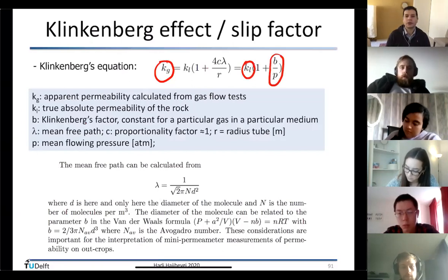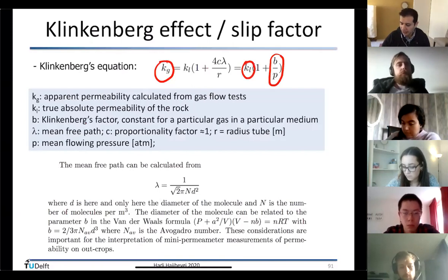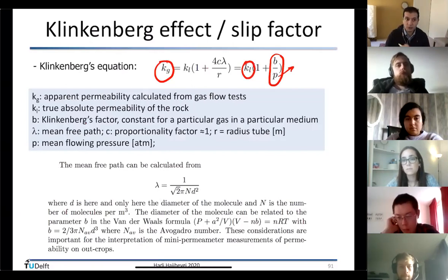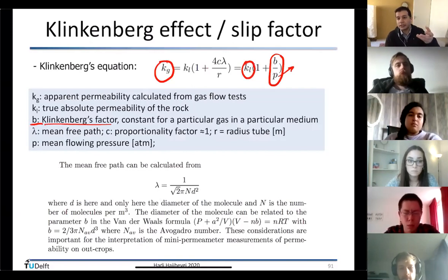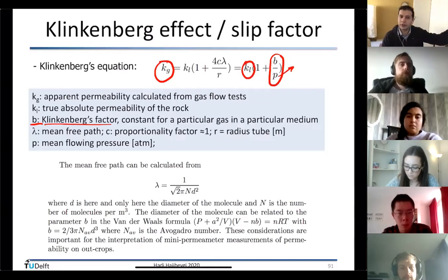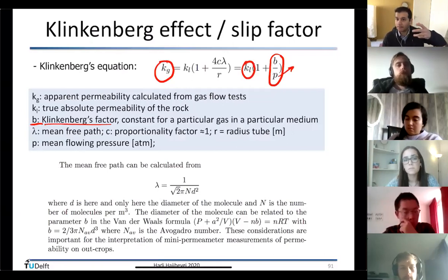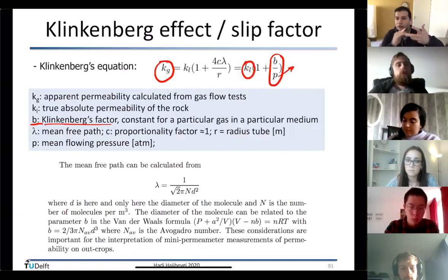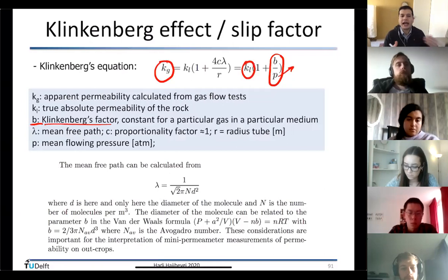The correction to gas permeability: the permeability measured with gas (k_g) should be corrected to liquid permeability (k_L). The correction term is b/P — Klinkenberg's factor b divided by pressure. At very high pressure, the difference between liquid and gas permeability is negligible. At very low gas pressure, you must correct: k_L = k_g corrected with the Klinkenberg factor. When publishing, you report k_L, not k_g.